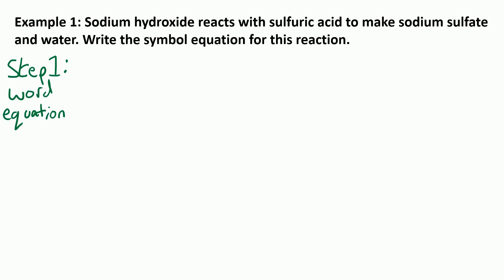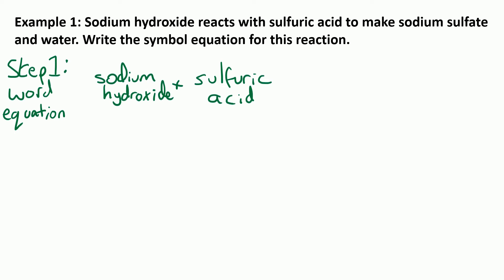So the two reactants that are reacting together go on the left, so that would be sodium hydroxide and sulfuric acid. And then the two products will be on the right: sodium sulfate and water.